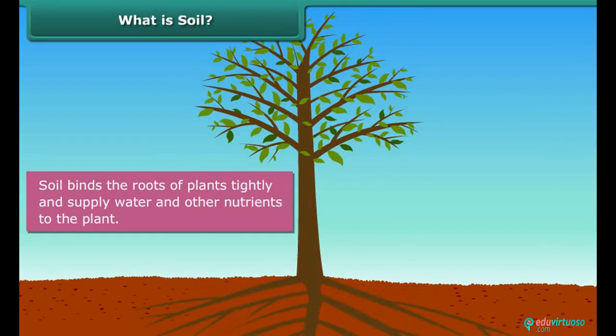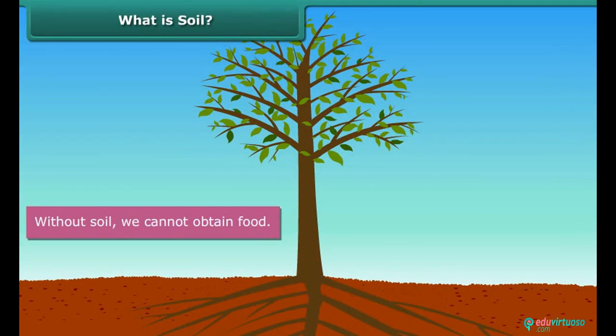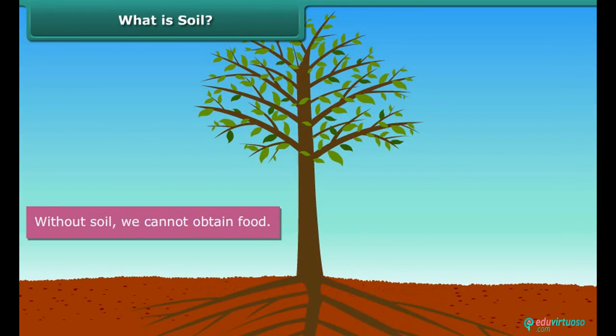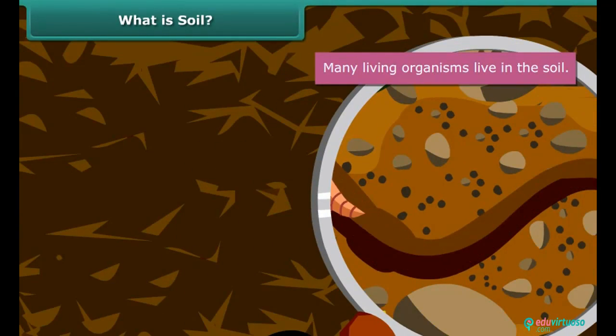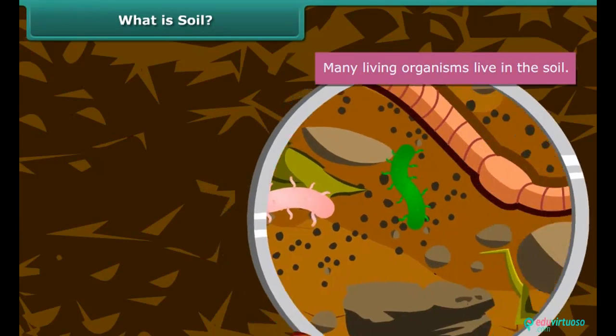Well, soil is needed for the growth of plants. It binds the roots of plants tightly and supplies water and other nutrients to the plant. Without soil, we cannot obtain food. Moreover, many living organisms live in it. So we can say that soil is a very essential part of our life.